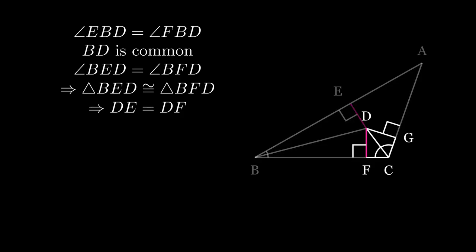Similarly, using triangles FDC and CDG, we can show that DF is equal to DG. So, all three perpendiculars are equal.